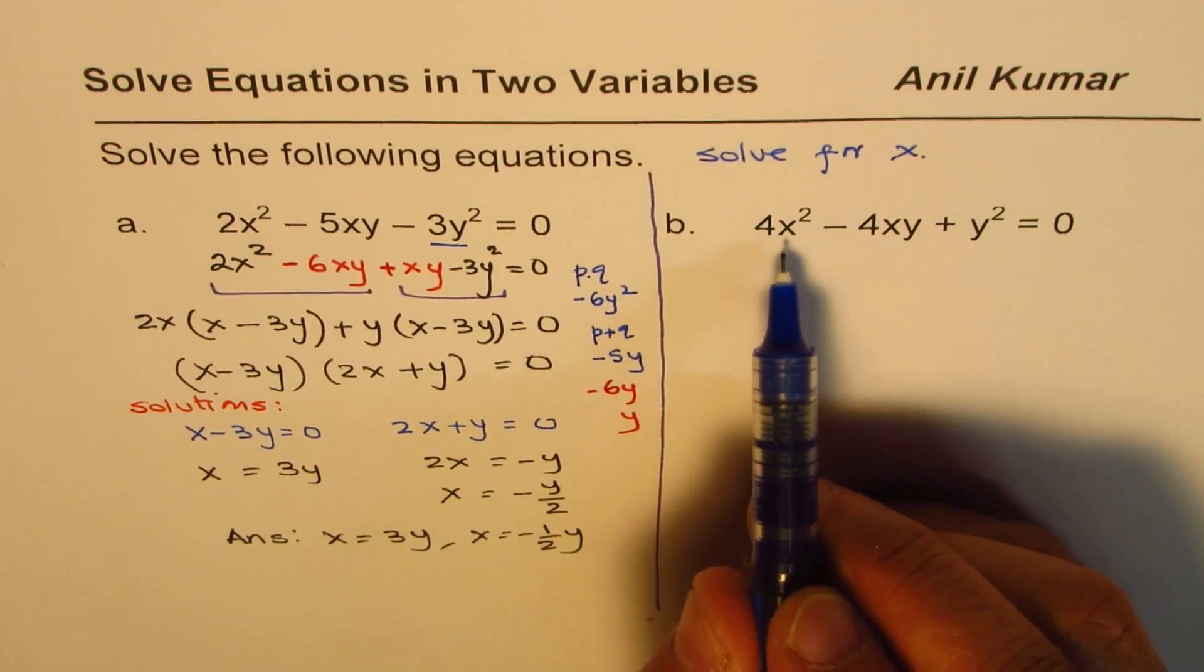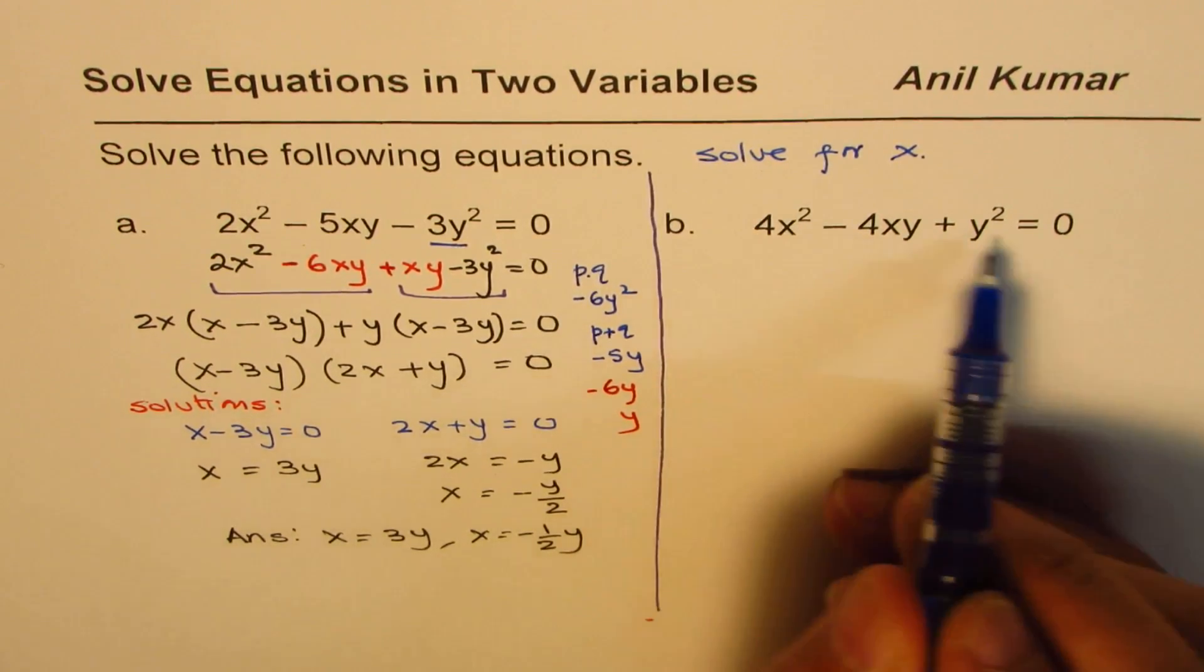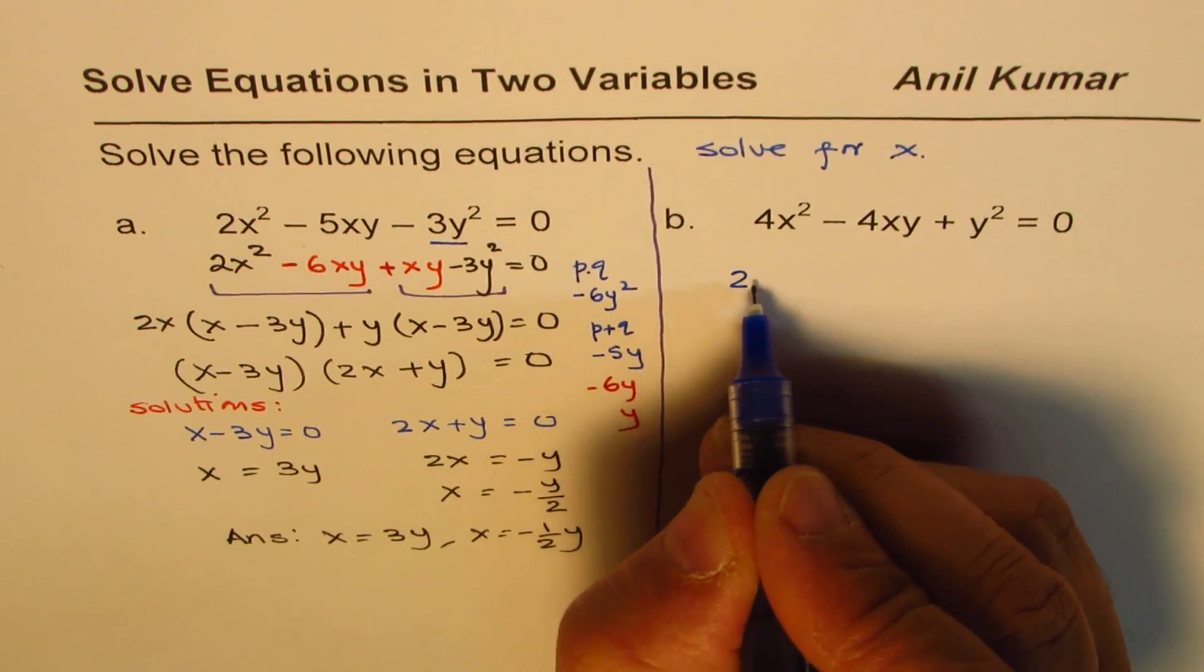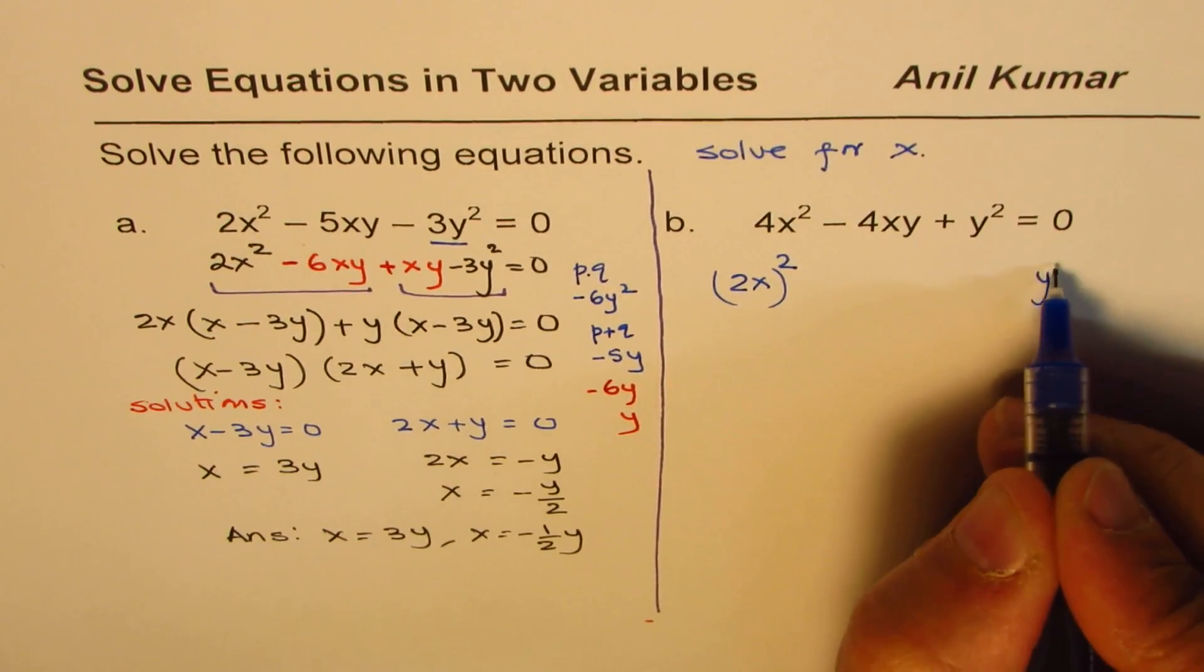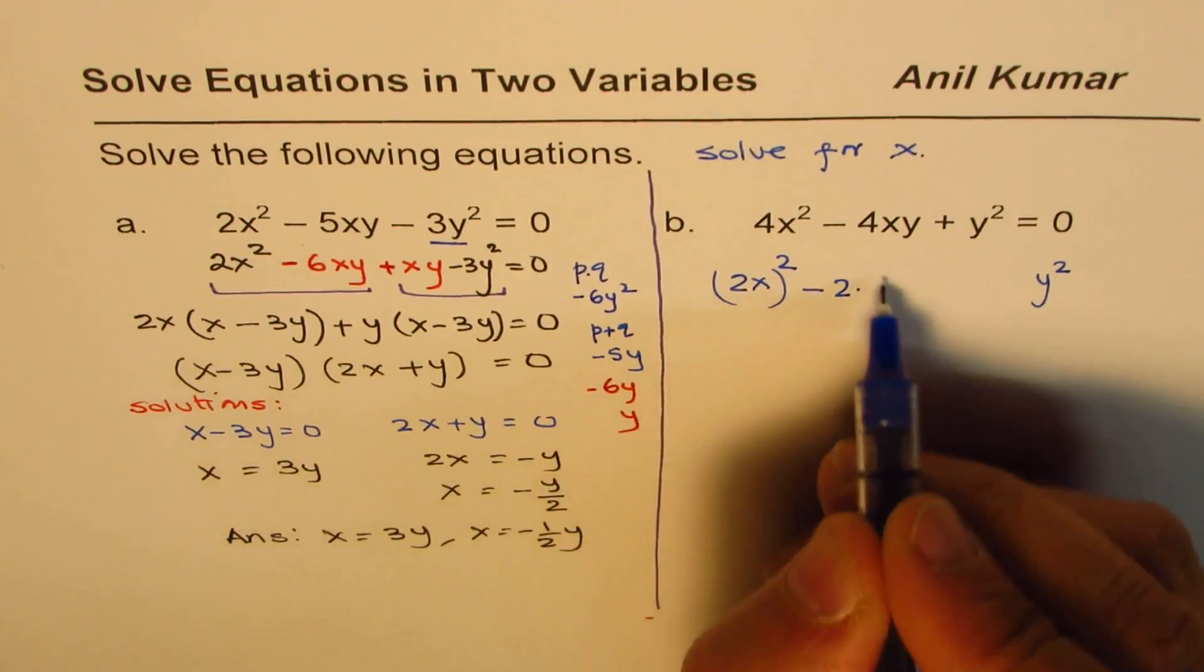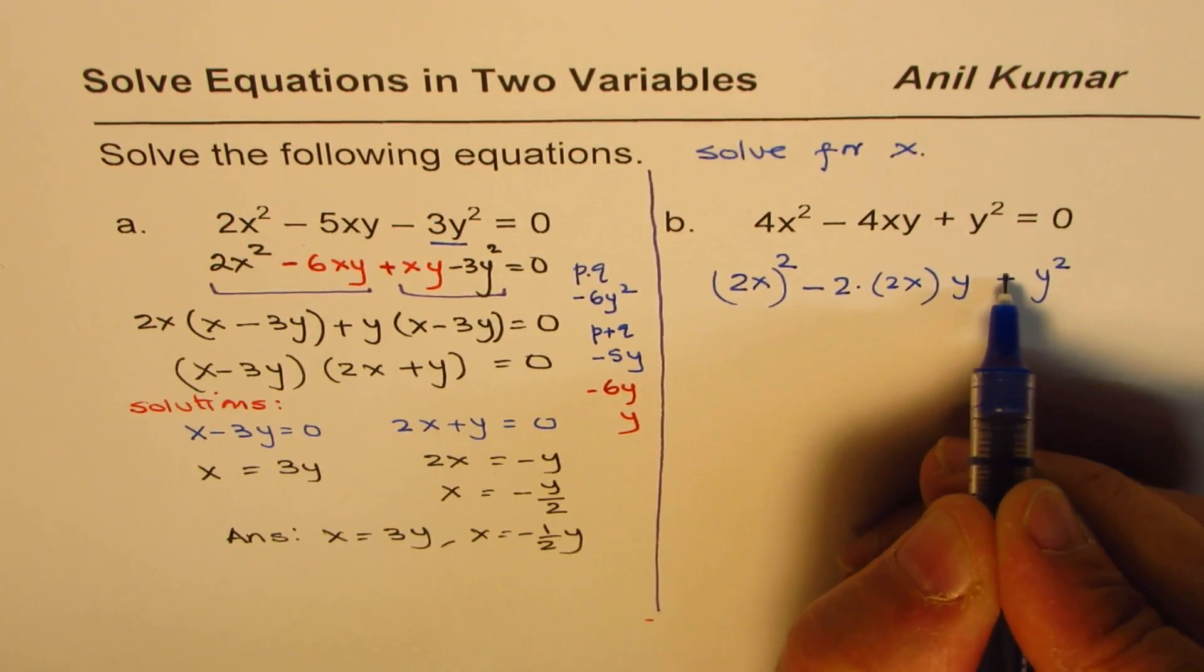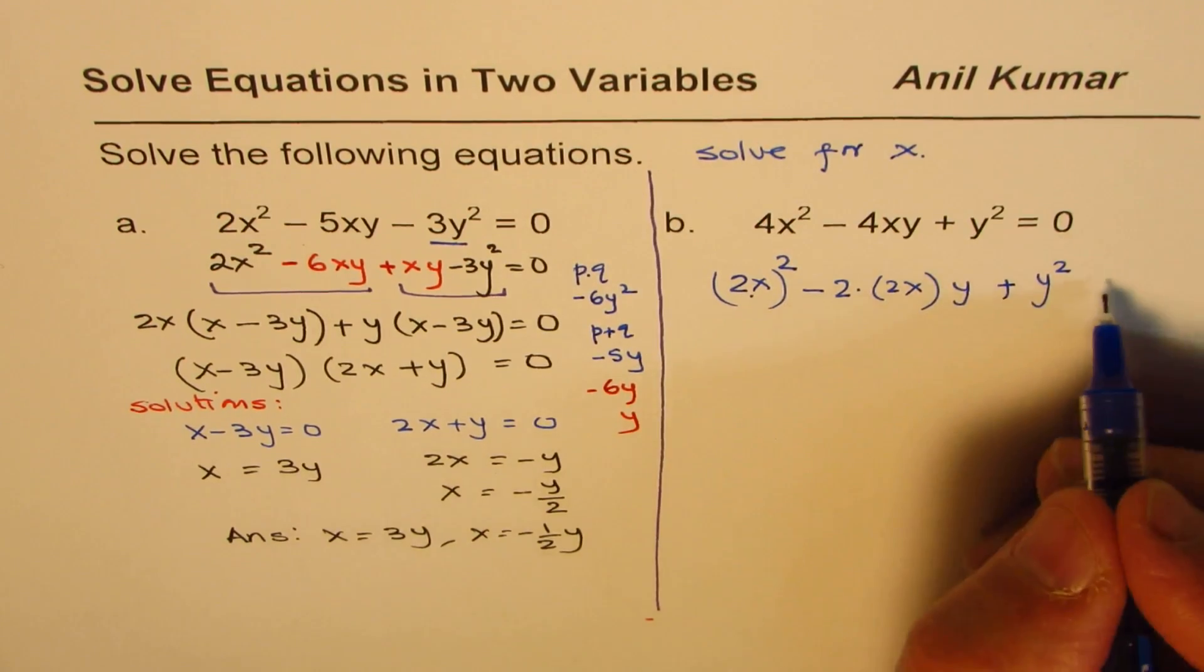The second equation is 4x squared minus 4xy plus y squared equals to 0. It seems to be a perfect square. See, 4x squared is 2x whole square. Y squared is y squared. And the center term is minus 2 times 2x times y. Do you see that? So the center term is twice the product of these two.